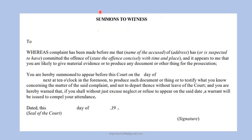Here I am showing a format of a summon which is issued to the witness to appear in court. The format may vary from court to court, place to place, or country to country. If you go through this format, you will find that the name of the accused is mentioned, the address, and what time the witness has to appear in court. The court also mentions that if you excuse, neglect, or refuse to appear on the said date, a warrant will be issued to compel your attendance. The date and seal of the court are mentioned, along with the signature of the presiding officer.